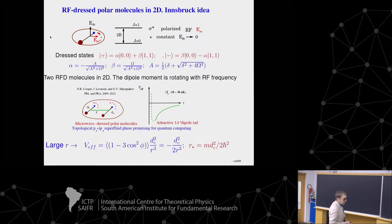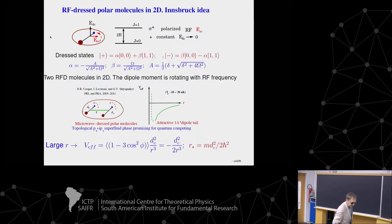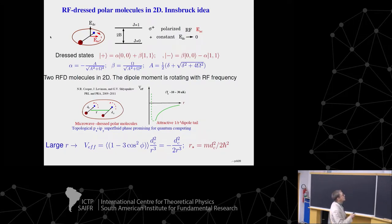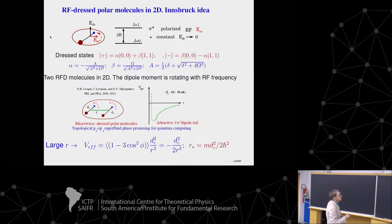If I consider such two radiofrequency dressed molecules in 2D, then I may think of the dipole moment as rotating with the radiofrequency, like this in the plane. I can write down the effective interaction potential. At large distances between the molecules, it's minus unity divided by r³. At smaller distances, it acquires a potential well and a repulsive part. I would like to emphasize that this optically induced potential occurs at distances 100, 200, 300 Ångströms, which are much larger than the distances of interatomic interaction.